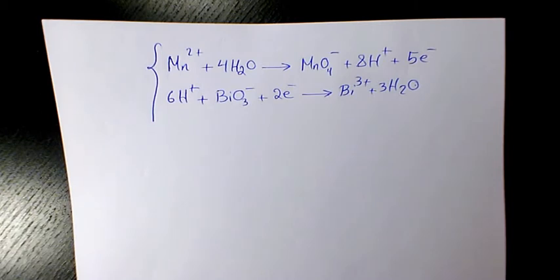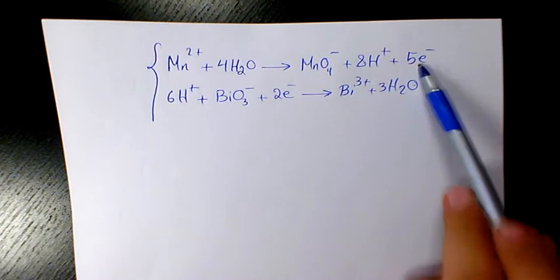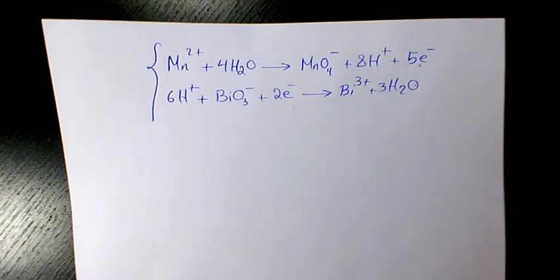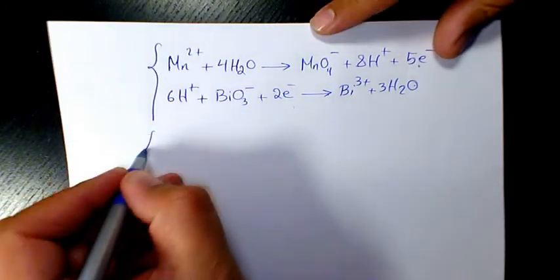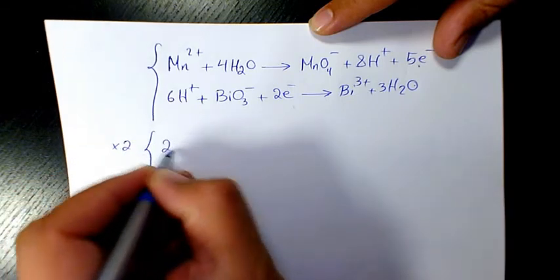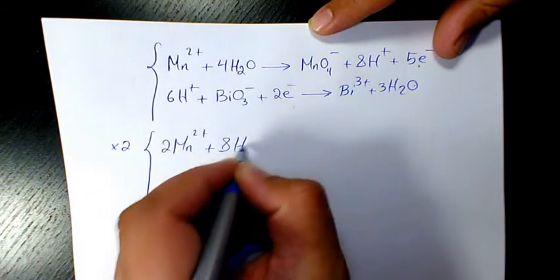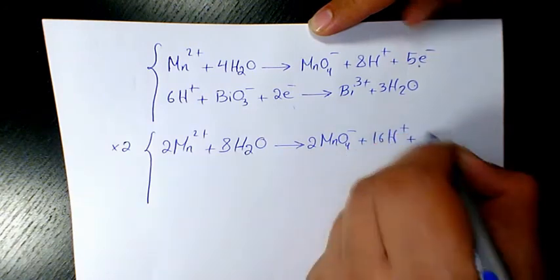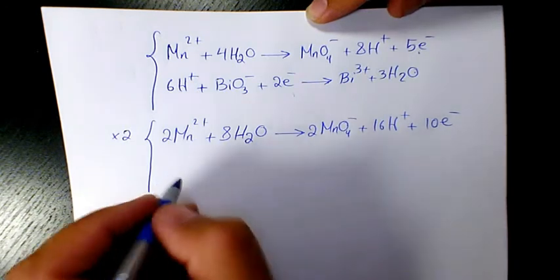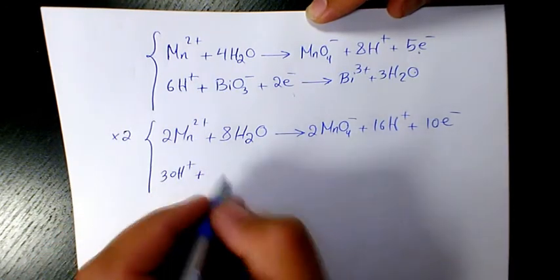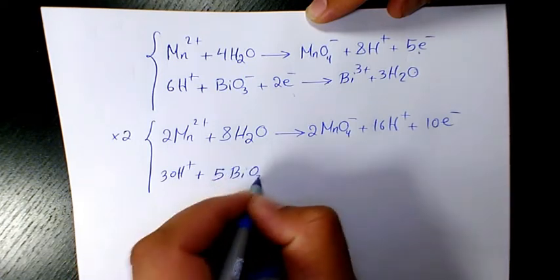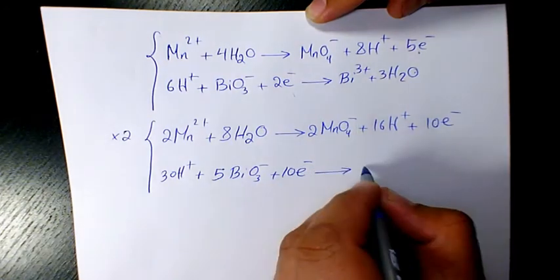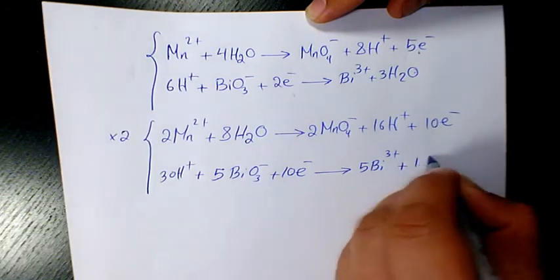Now we need to balance the number of electrons in each reaction. The first has five electrons and the second has two electrons. We need to make them equal, so we multiply the first reaction by two and the second by five. Multiplying the first by two: 2Mn²⁺ + 8H₂O → 2MnO₄⁻ + 16H⁺ + 10e⁻. Multiplying the second by five: 30H⁺ + 5BiO₃⁻ + 10e⁻ → 5Bi³⁺ + 15H₂O.